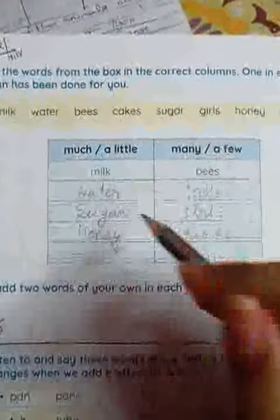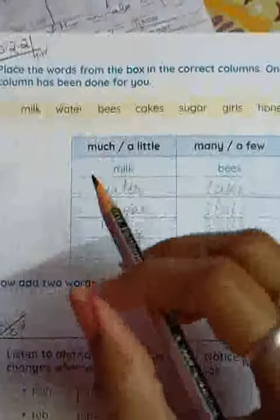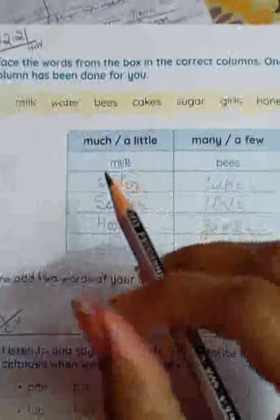You have two words. You have to match. What is much? You have to match by a little. Milk. Match milk. A little milk.